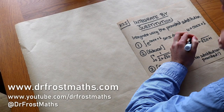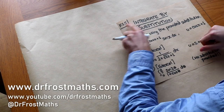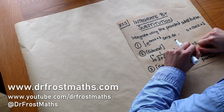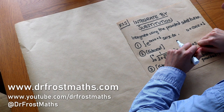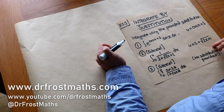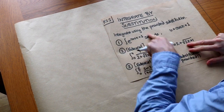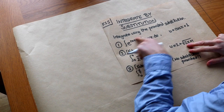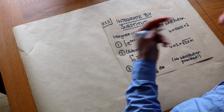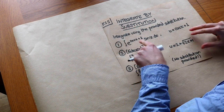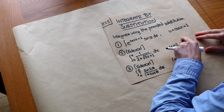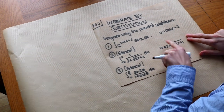Hello and welcome to this Dr. Ross Maths video on Key Stage 5 Integrating by Substitution. We integrate by substitution when we have a complicated expression in terms of x that we can make simpler if we get it in terms of some other variable via a suitable substitution.